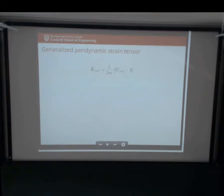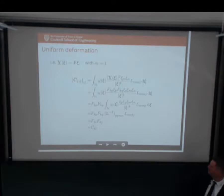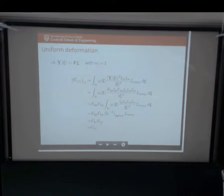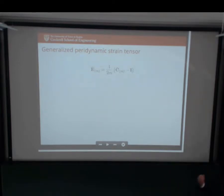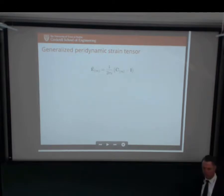We can define a new family of non-local strain measures using this tensor. The key thing to remember is that in the classical Seth-Hill strain, you have C raised to the 2M power - but that's not what's happening here. The penalization appears on the change in length of the bond. We can prove that for M equals one, in uniform deformations, you get exactly the Green-Lagrange strain. For M equals zero, you get exactly the Hencky strain. For any value of M in the linearization, you get the classic linear strain.